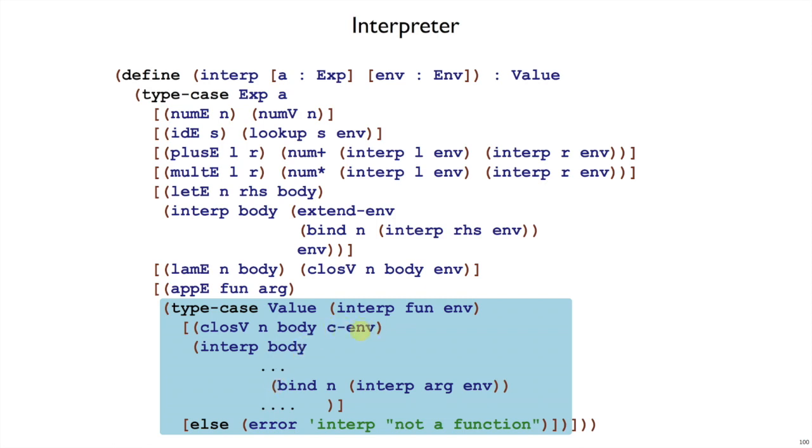It's important to use cEnv here. If we use Env here, then we've gotten things mixed up. We're using the wrong substitutions with the wrong expressions. So it's crucial that we use cEnv, the one that's stored with the closure, as we evaluate the body that is encapsulated in that closure.